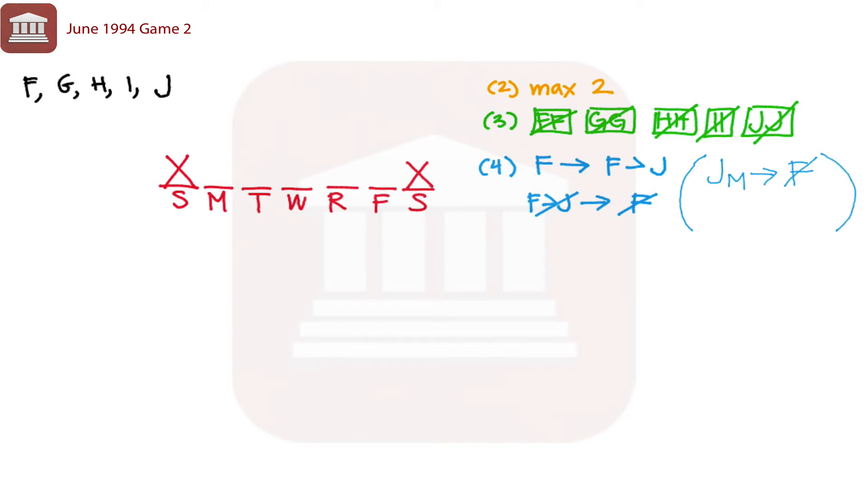We have our contrapositive, if F is working, that means that J is not going to be working on Monday.